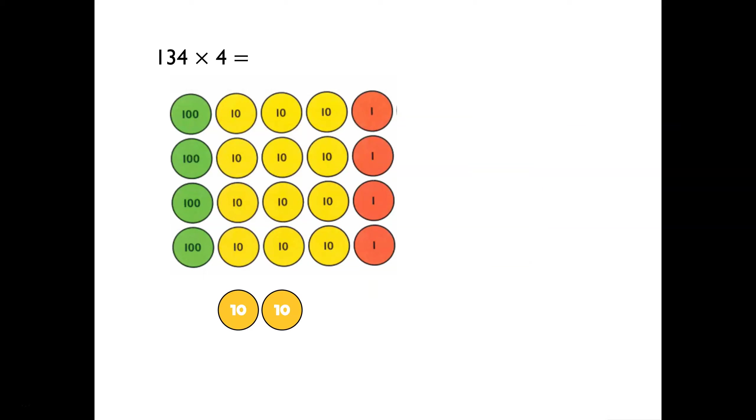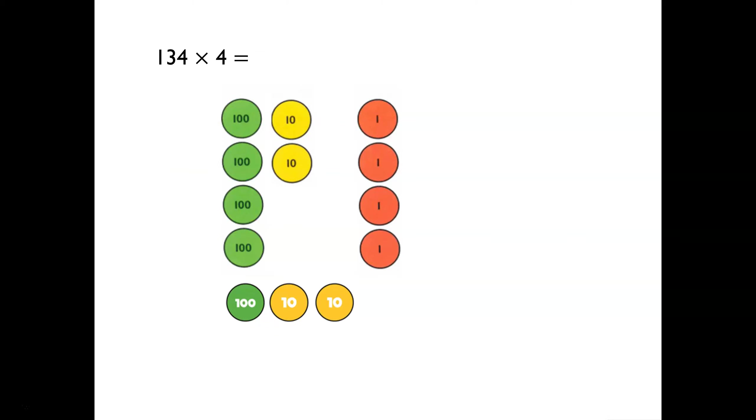Next, looking at the tens, I notice that we need to exchange. There are 14 tens. So I will exchange 10 tens for 100, just like this. We cannot make an exchange in the hundreds column because there is only 5. So in total, we have 4 ones, 4 tens and 5 hundreds. 134 multiplied by 4 is equal to 544.